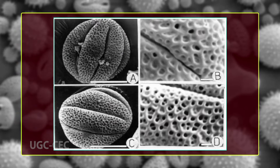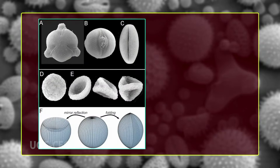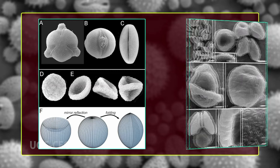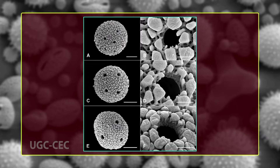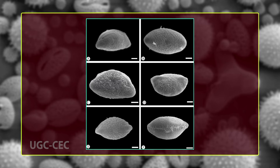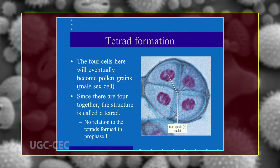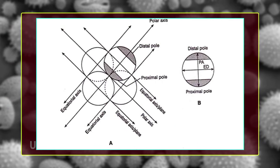Most primitive angiosperms shed their pollen grains at the two-nucleate stage, whereas in most advanced groups pollen is shed at the three-nucleate stage. Angiosperms mostly have pollen grains of radial symmetry, with bilateral symmetry being found in several gymnosperms. Most pollen grains are globose in shape, although boat-shaped, ellipsoidal, and fusiform forms are also found in different angiosperms. Since most pollen grains form tetrads in early stages, the outer end of the grain is termed the distal pole, while the inner end is the proximal pole, and the line joining the two poles is the polar axis.